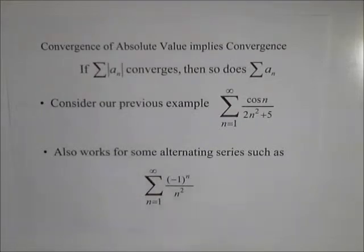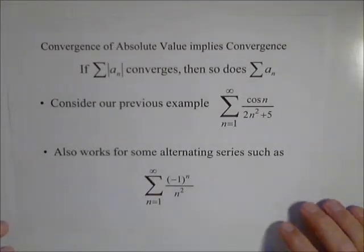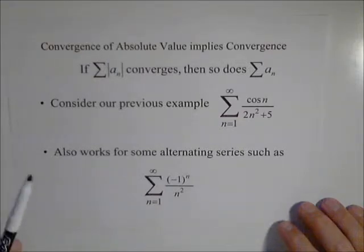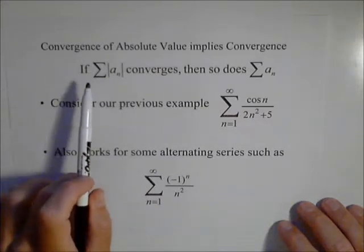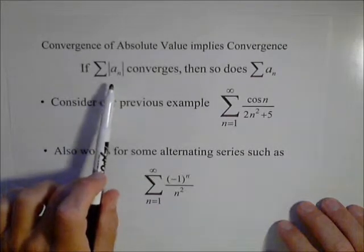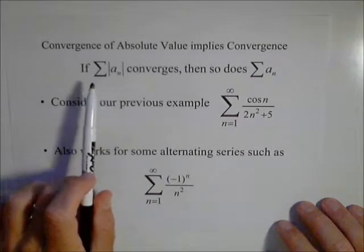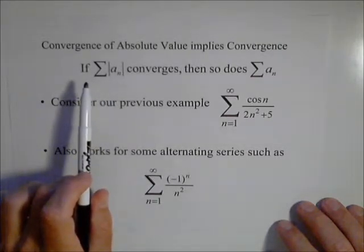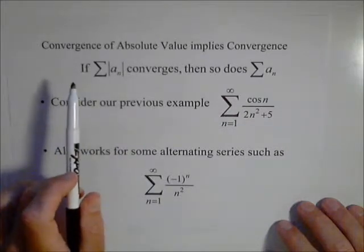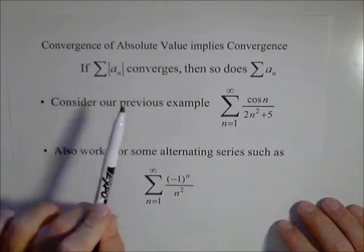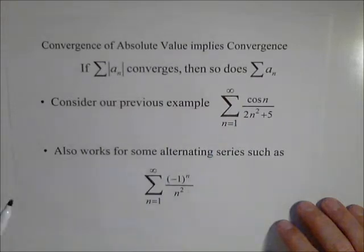In this video, I'm going to talk about a test I alluded to in another video: if you can show the absolute value of the terms of a series converge, then the series converges. If the summation of the absolute value of the terms converges, the series is what's called absolutely convergent. I just want to use this test because it will cover some series that our other tests can't.